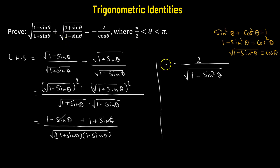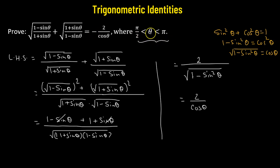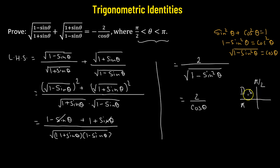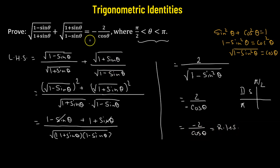When we take the square root of 1 minus sine squared theta, this equals cosine theta. So our result will be 2 over cosine theta. Now this is not exactly the expression on the right-hand side — we don't have a negative sign yet. But the condition given is that theta lies between pi over 2 and pi, meaning we are in the second quadrant. In the second quadrant, only the sine function is positive; everything else is negative. So cosine theta is negative, and therefore we finally obtain negative 2 over cosine theta, which is the expression on the right-hand side. We have successfully shown that the left-hand side equals negative 2 over cosine theta whenever theta is in the second quadrant. Hence proved.